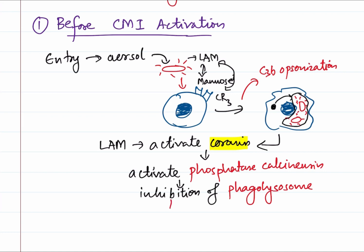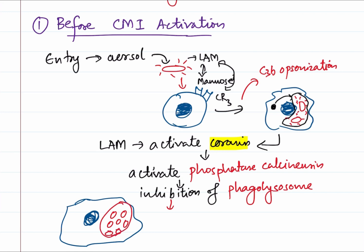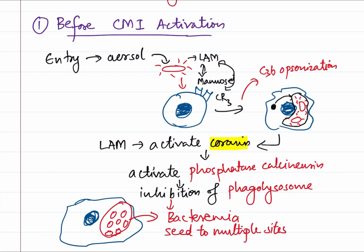So what happens is that Mycobacterium tuberculosis proliferates inside the phagosome, and they will rupture, leading to bacteremia. The bacilli will seed to multiple sites. This occurs within the first three weeks, and the patient during this period is asymptomatic. Despite this bacteremia, there are usually no symptoms, or at most a mild flu-like illness is produced.